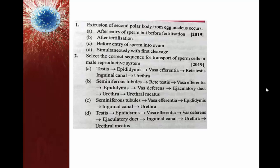Extrusion of second polar body from the egg nucleus occurs: after entry of sperm but before fertilization, after fertilization, before entry of sperm into ovum, or simultaneously with first cleavage? During oogenesis, from one oogonium only one ovum or egg is produced. Another haploid set of chromosomes enters into a small haploid structure called polar body.